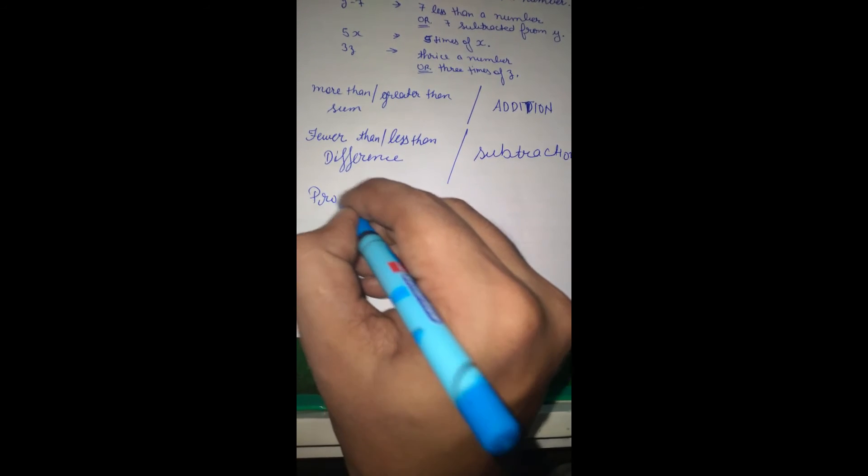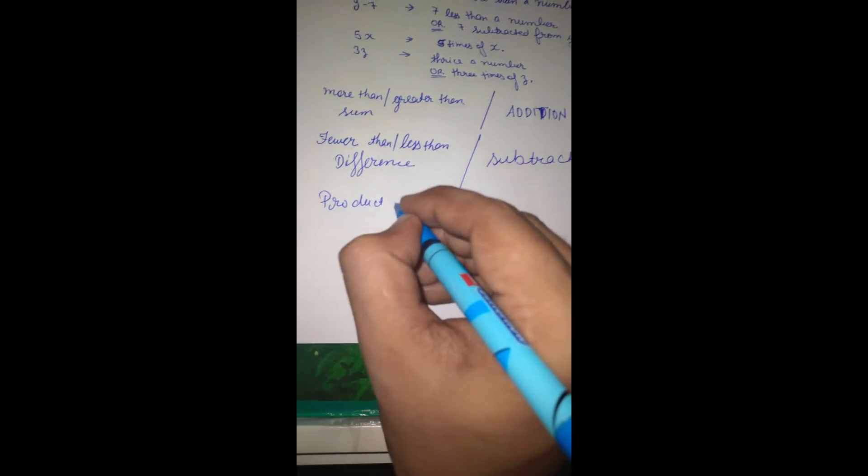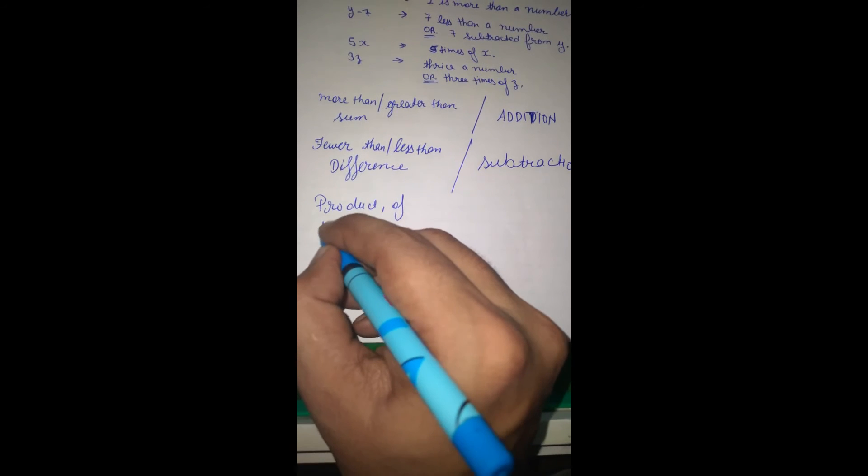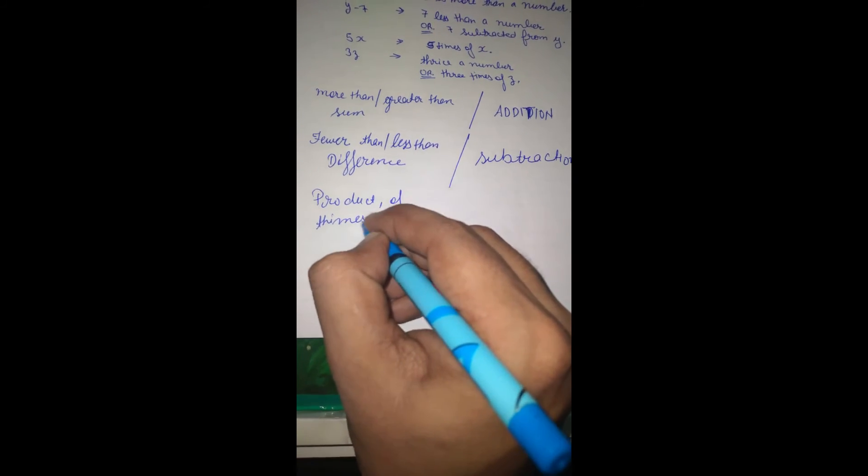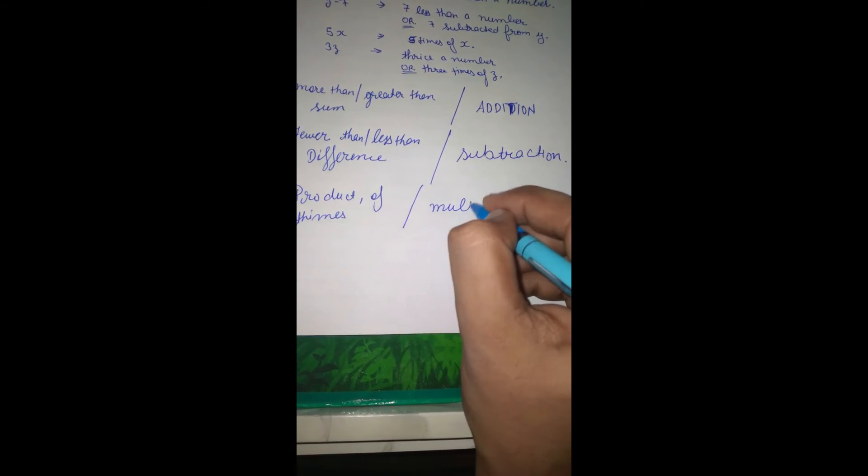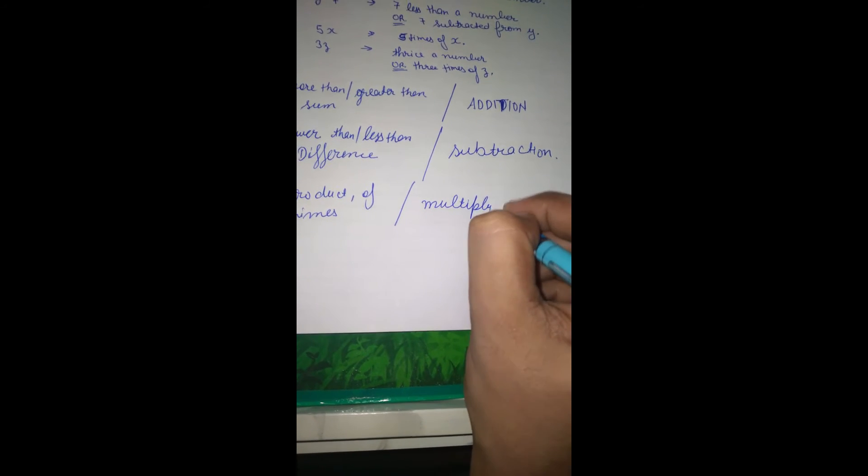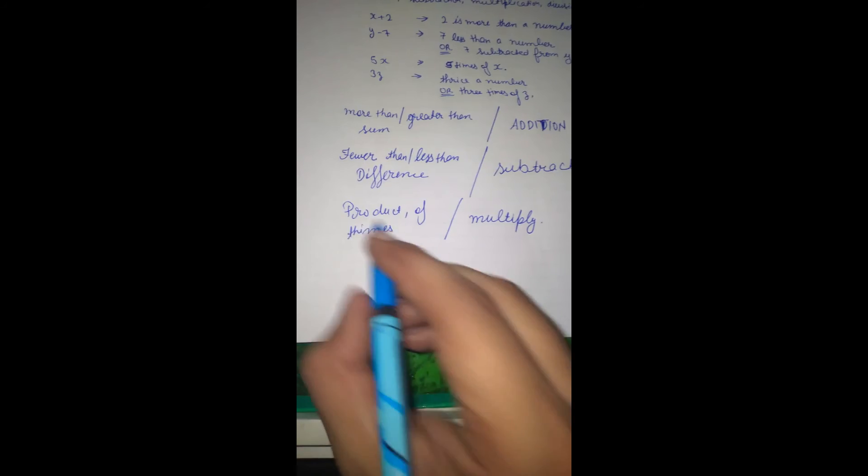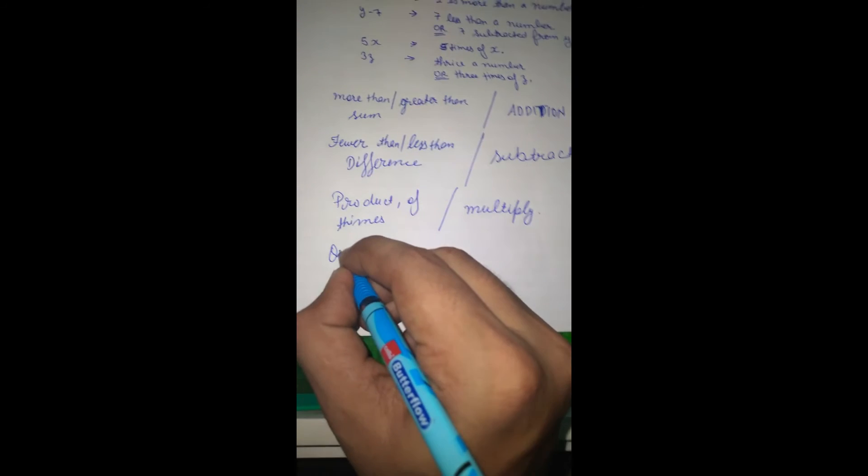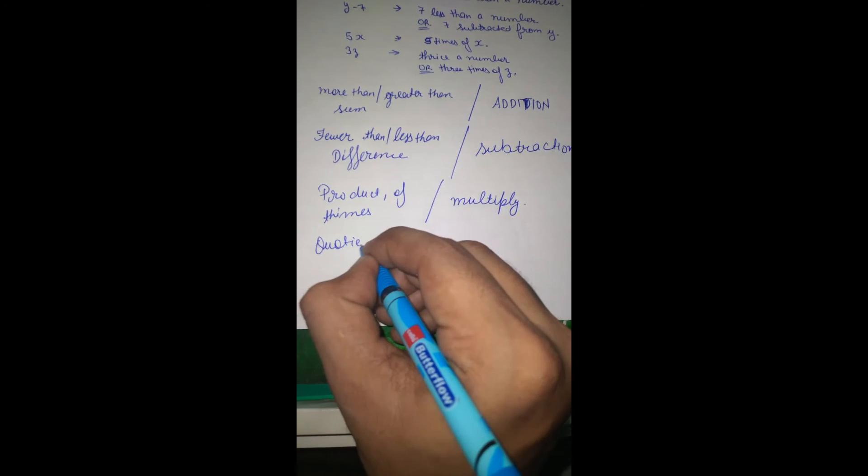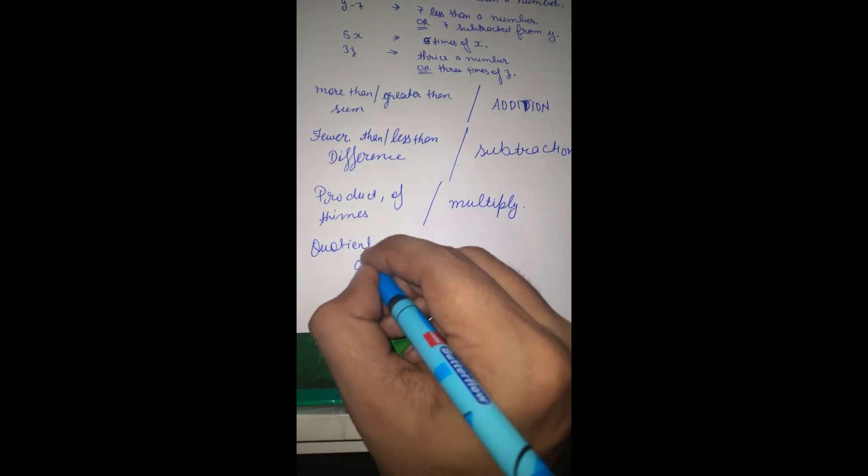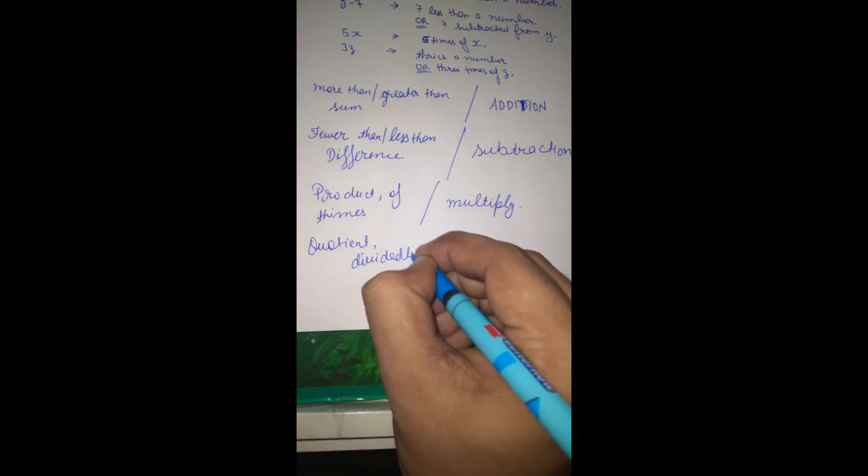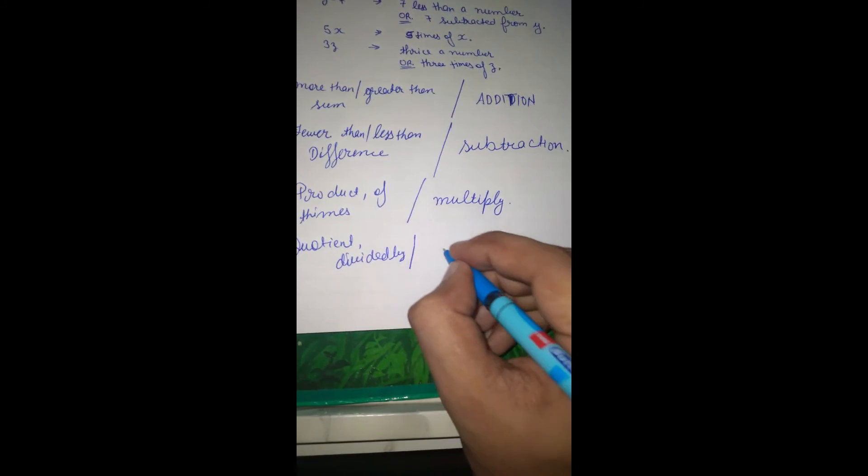And when we have product of, times, or multiply, we use multiplication. And when it's quotient or divide, divided by, then we place a sign of division.